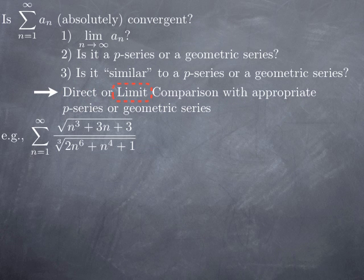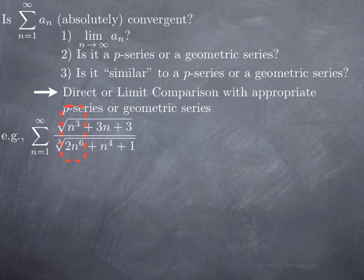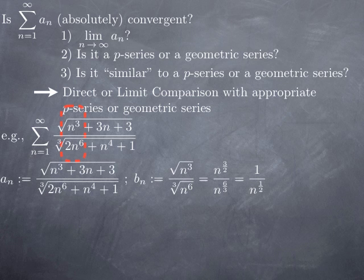For limit comparison, consider the series whose general term is the square root of (n³ + 3n + 3) divided by the cube root of (2n⁶ + 1). The idea is that all that matters is the asymptotic behavior, determined by the leading terms. At the top we have n³ under a square root, giving n^(3/2); at the bottom we have n⁶ under a cube root, giving n². So b_n should be n^(3/2) / n² = 1 / n^(1/2). This is how you pick b_n for limit comparison.